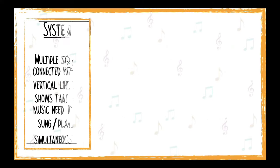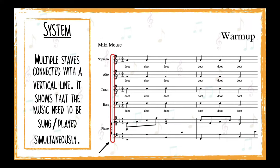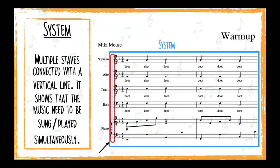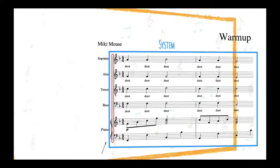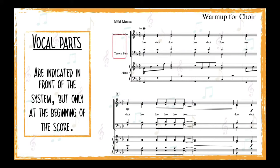When a music piece is created for more than one voice part, we use a vertical line that connects multiple staves into a system. The important thing to remember about the system is that the music within one system should be sung and played simultaneously. Vocal parts are indicated in front of the system, but only at the beginning of the score. Since it can sometimes be difficult to navigate through the score and find your vocal part, it is encouraged that you mark your score with a pencil to follow along with more ease.